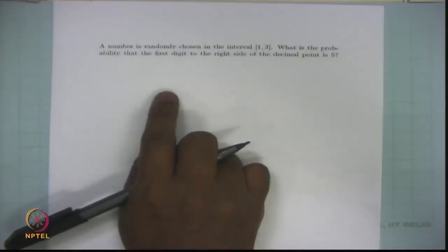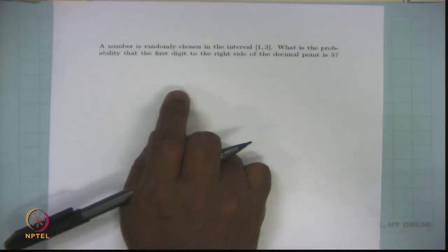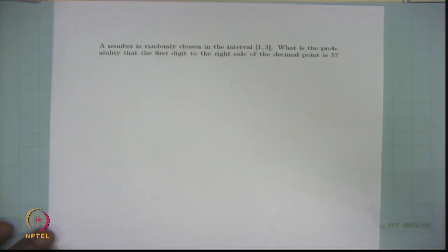A number is randomly chosen in the interval 1 to 3. What is the probability that the first digit to the right side of the decimal point is 5? Note that whenever we choose a number randomly, the possible sample points are equiprobable. Whenever a number is randomly chosen, that means it is a real number, and each possible real number has equal probability.